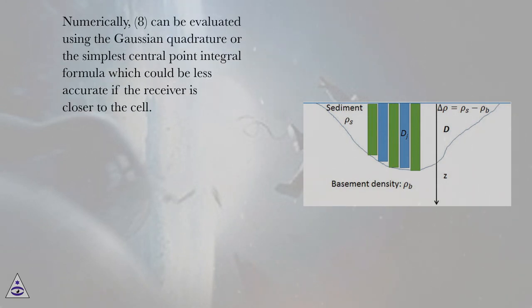Numerically, (8) can be evaluated using the Gaussian quadrature or the simplest central point integral formula which could be less accurate if the receiver is closer to the cell.